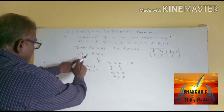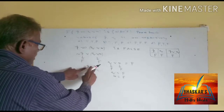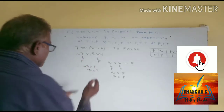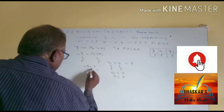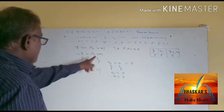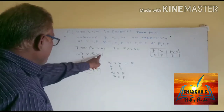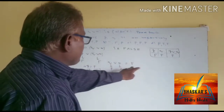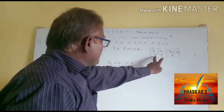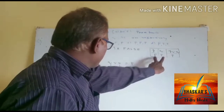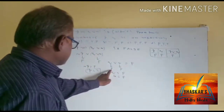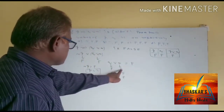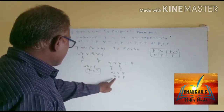So negation P is false, that means P must be true. Next, Q conjunction R: R is false, so both have F only, meaning Q must be false and R must be false.